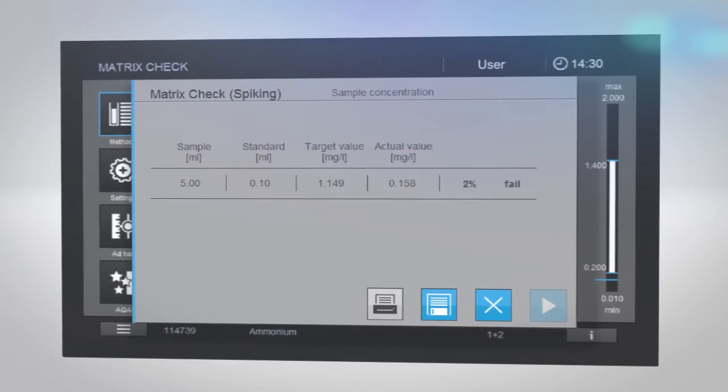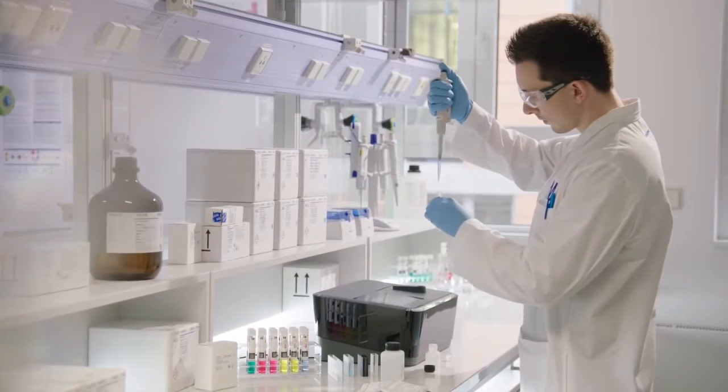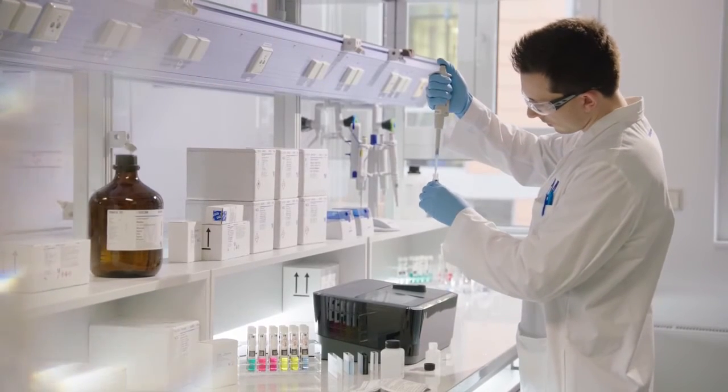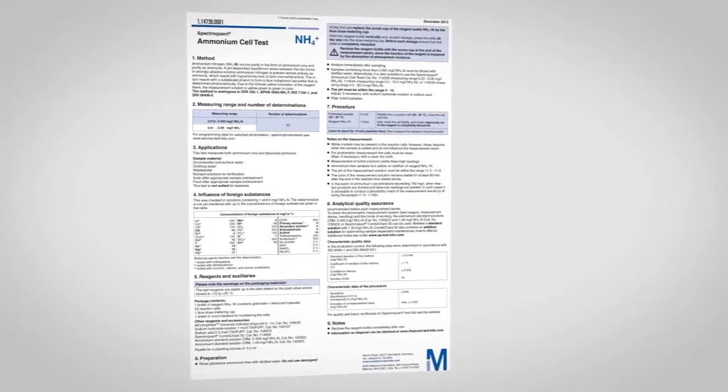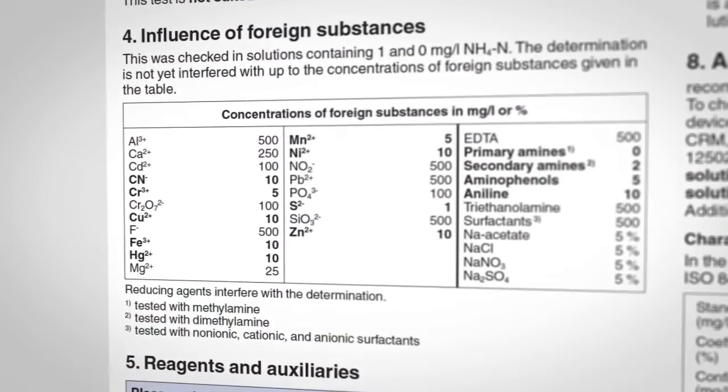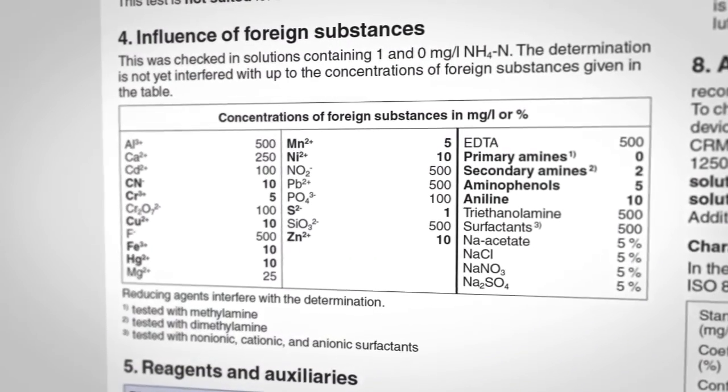However, if your matrix check is out of range, your original result may not be correct due to interferences in your matrix. Please check your sample preparation routine for adaptations to eliminate or reduce possible interferences. We also recommend that you refer to the package insert for additional information about possible interfering substances.